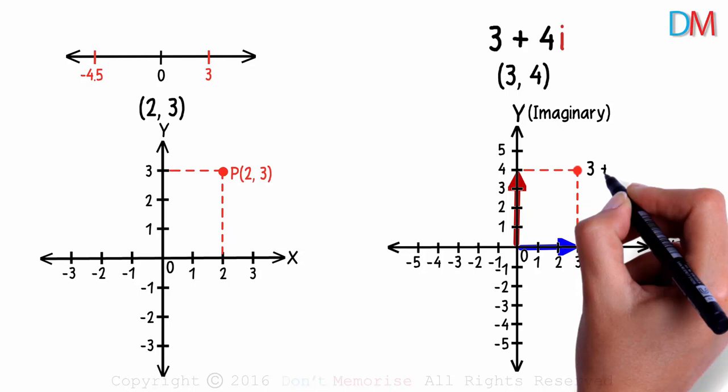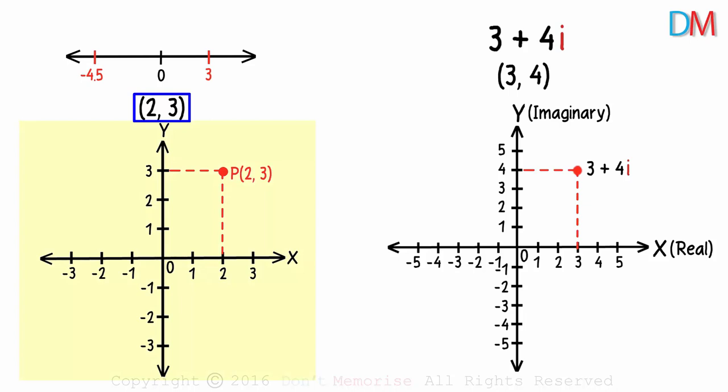To plot the ordered pair of real numbers, we use the x-y plane which had real numbers on both the axes. Do you remember what that plane was called? Yes, the Cartesian plane.